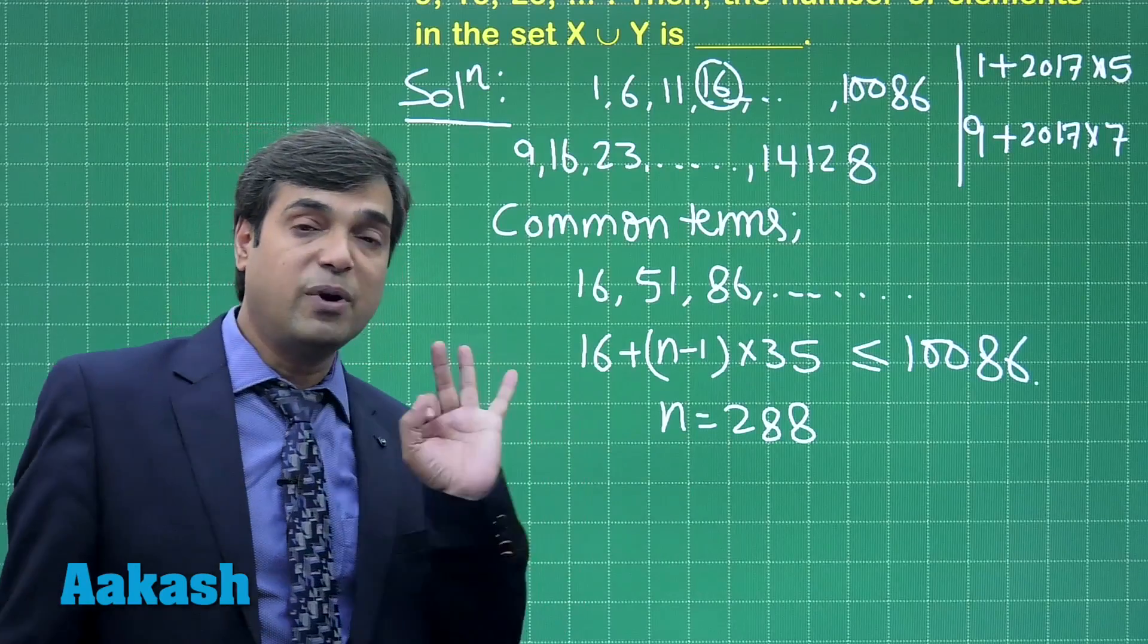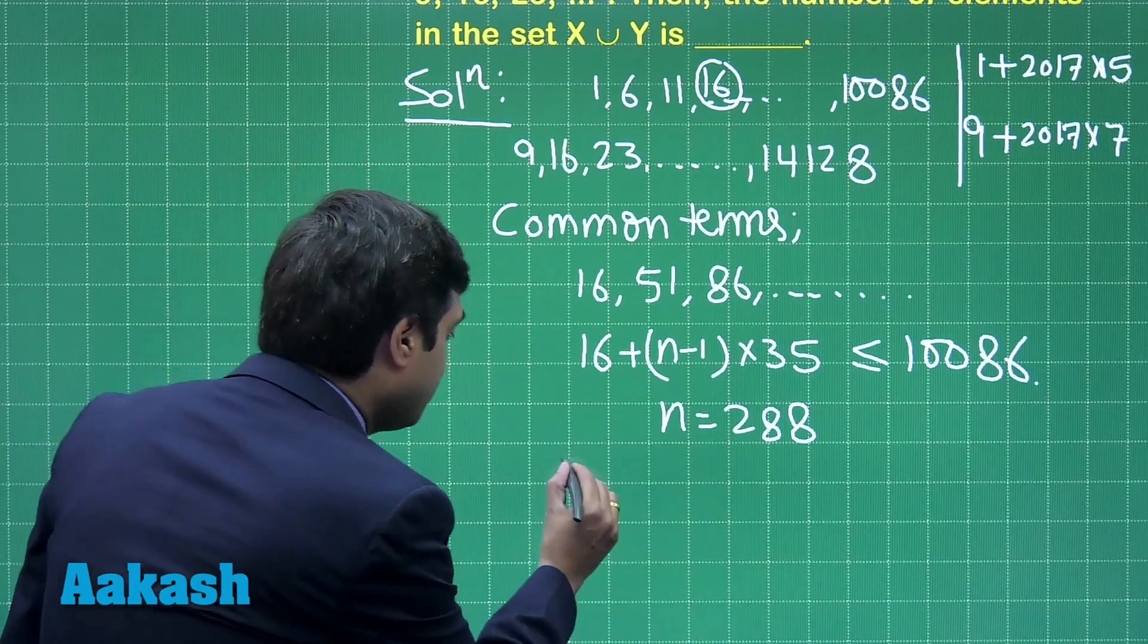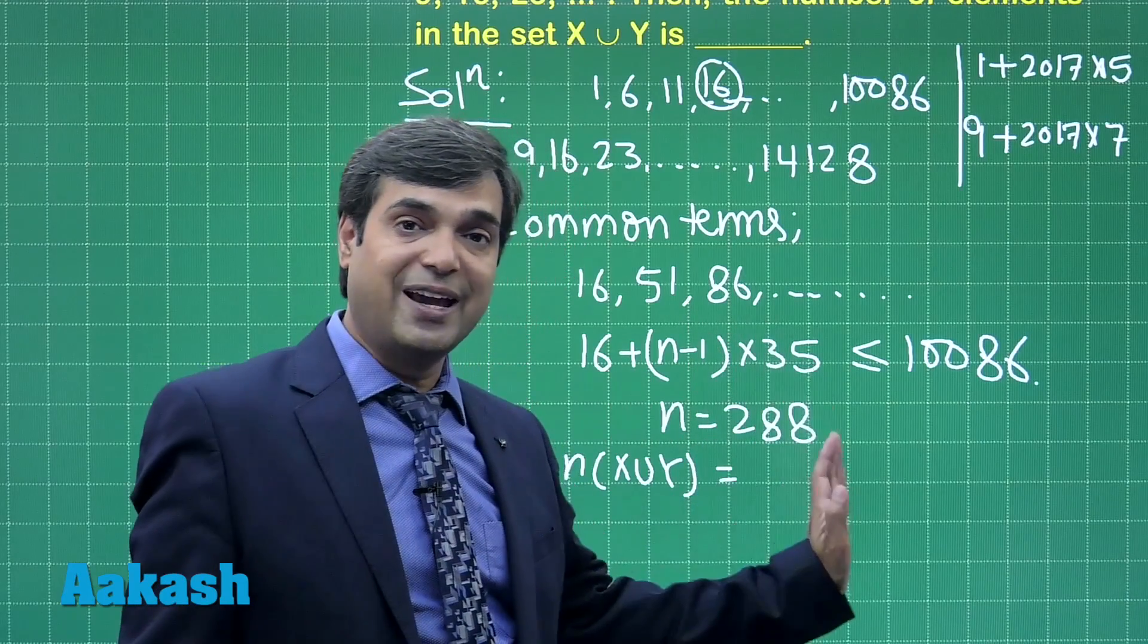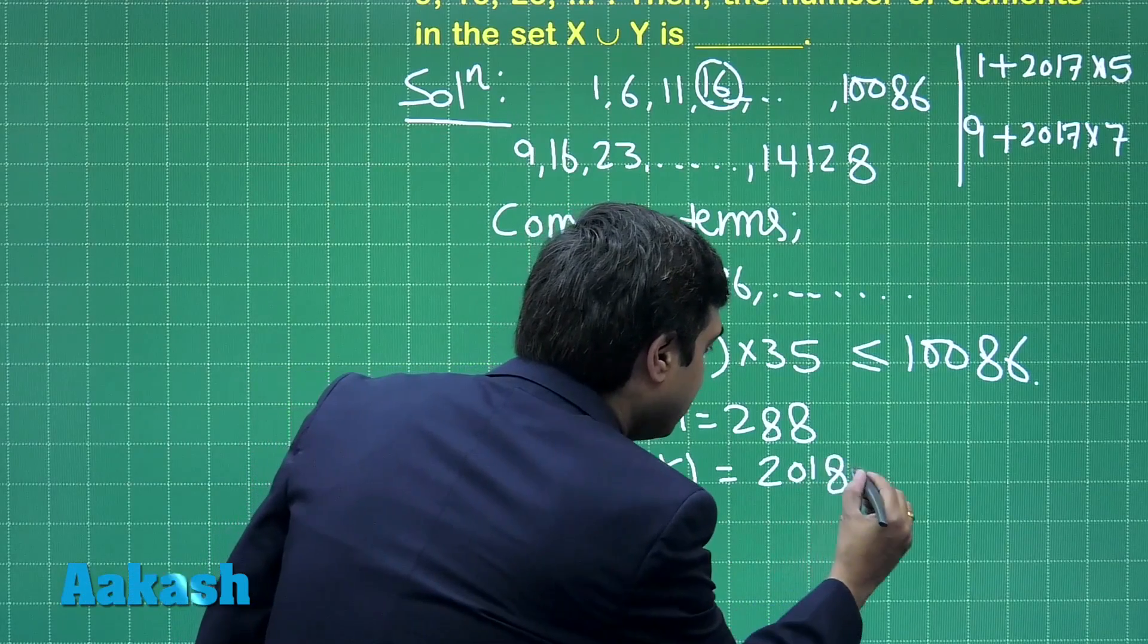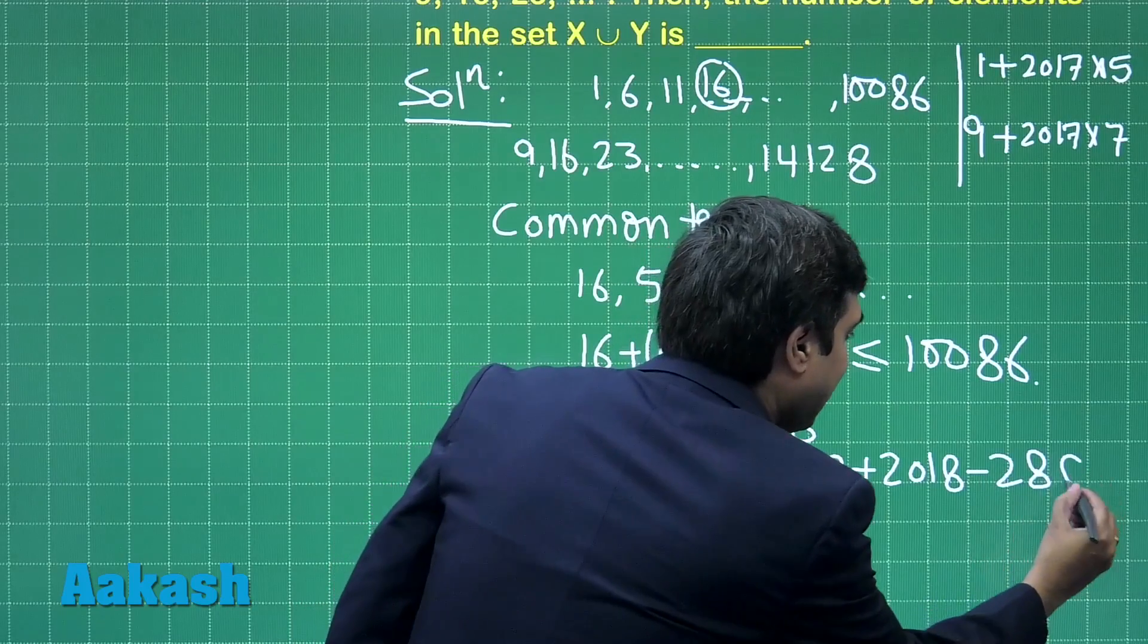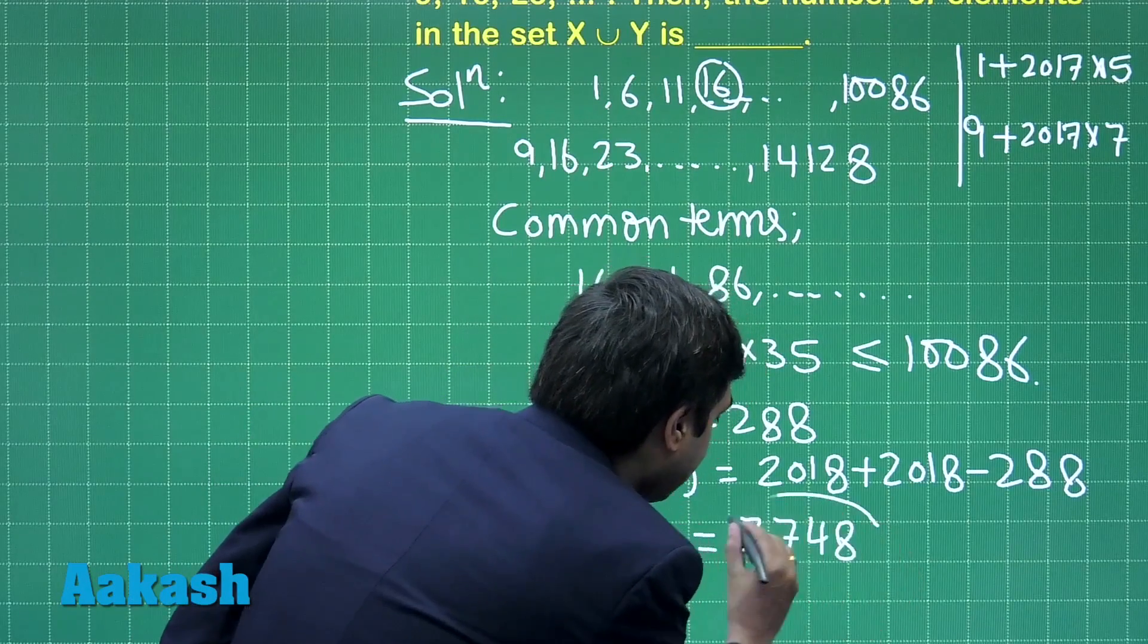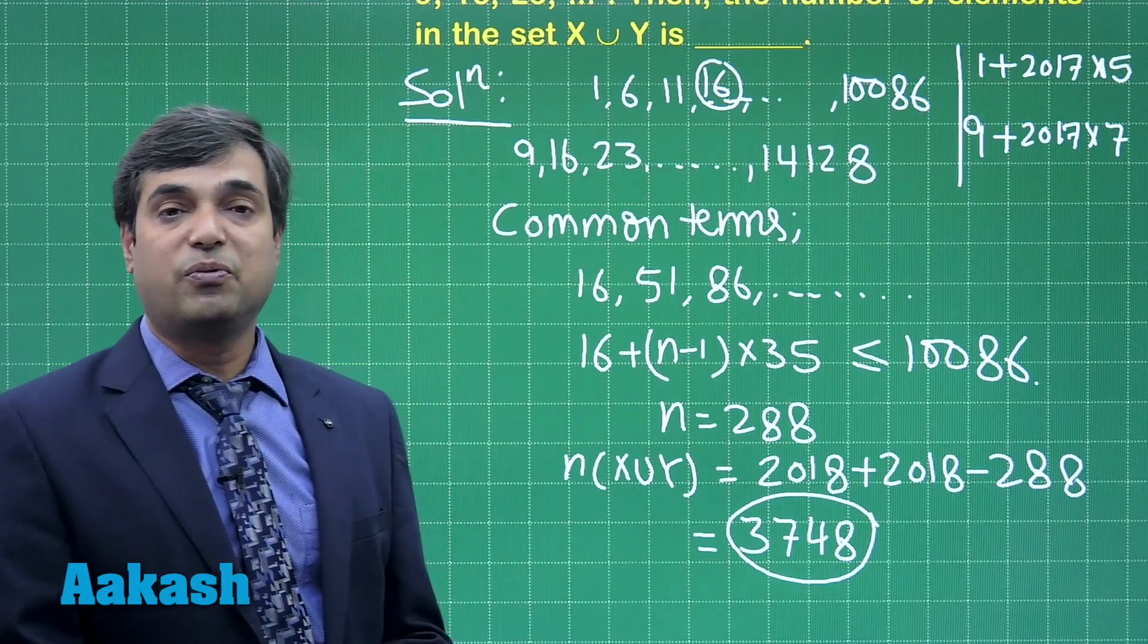Now, the question is about number of terms in X union Y. So, number of terms in X union Y will be equal to simple formula NX plus NY minus NX intersection Y, that is 2018 plus 2018 minus 288, just simplify to get the answer as 3748. So, these are the number of terms which are common to it. Let us move to the next question.